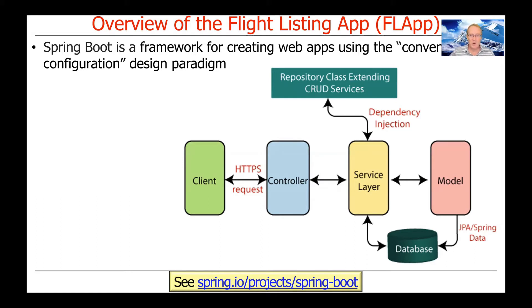One of the other nice things we do with this approach is we have persistence built into our application. Spring Boot and Spring MVC can make objects fairly trivially persistent by using something called JPA — the Java Persistence Architecture. This is super cool and relatively easy to program for the kinds of things we're doing here, making it easy to persist the entities we want to access in our FLAP application.